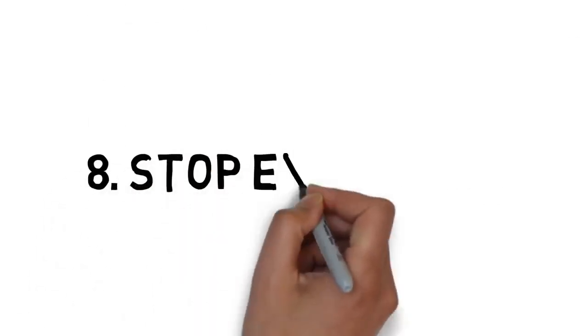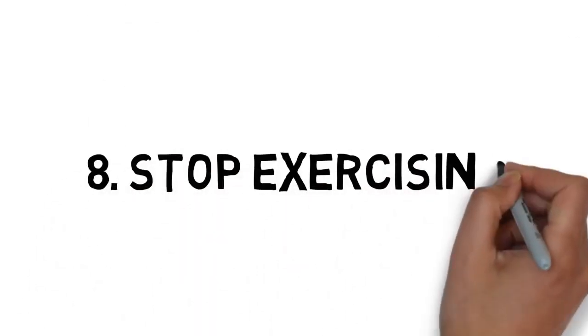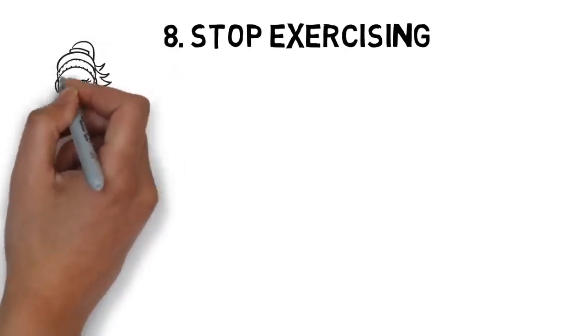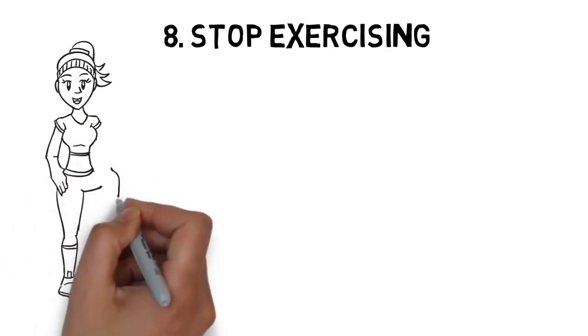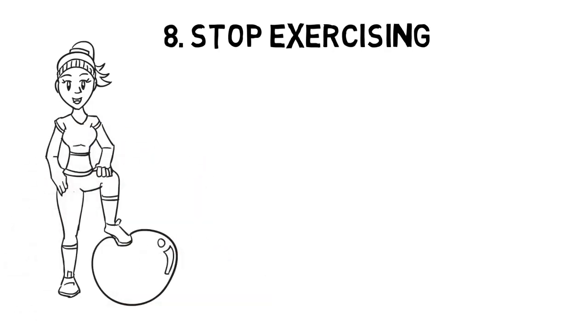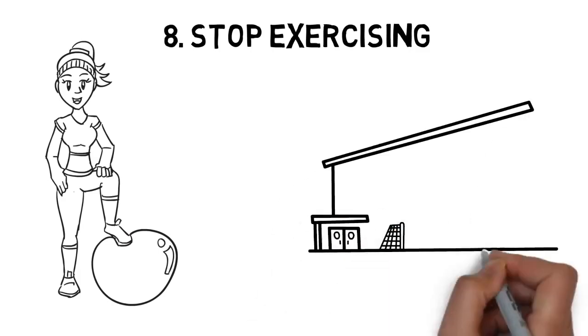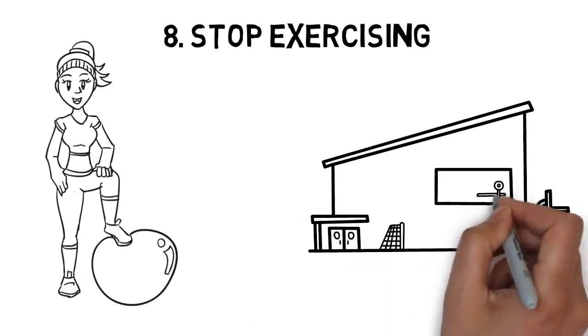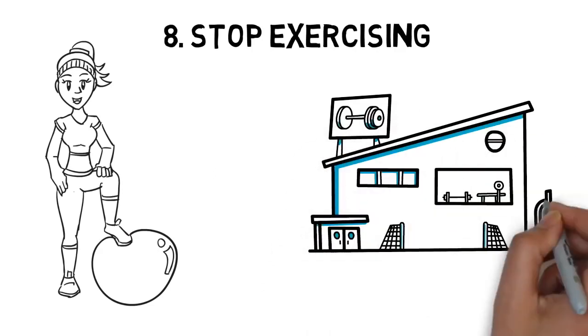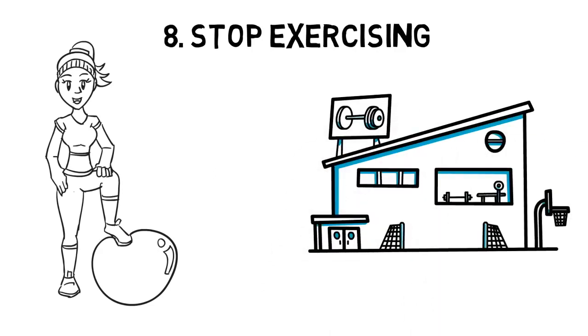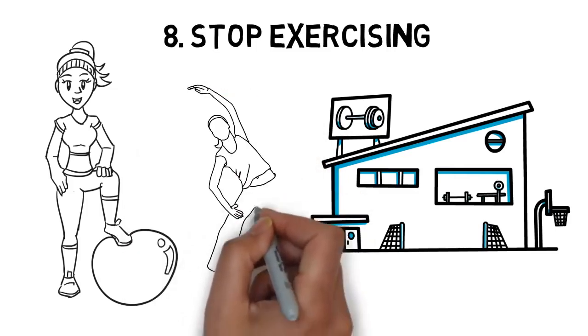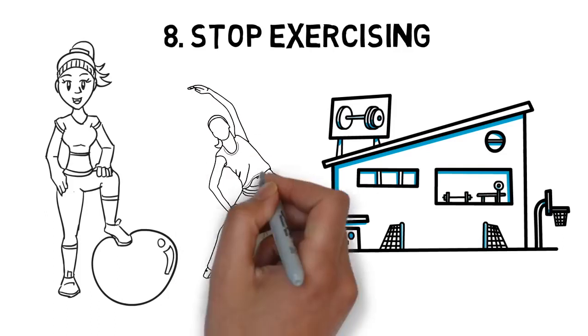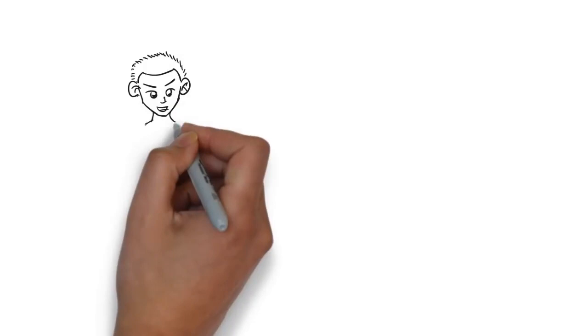8. Stop Exercising. In addition to eating unhealthier foods, the majority of poor people exercise far less than the average rich person. It's no secret that exercise is a critical part of most successful people's routines, but the majority of poor people opt out of a morning jog or trip to the gym. In fact, a number of studies have looked into this disparity and found that wealthier people are at least 50% more likely to work out a few times a week. But why is there such a big gap in exercise?